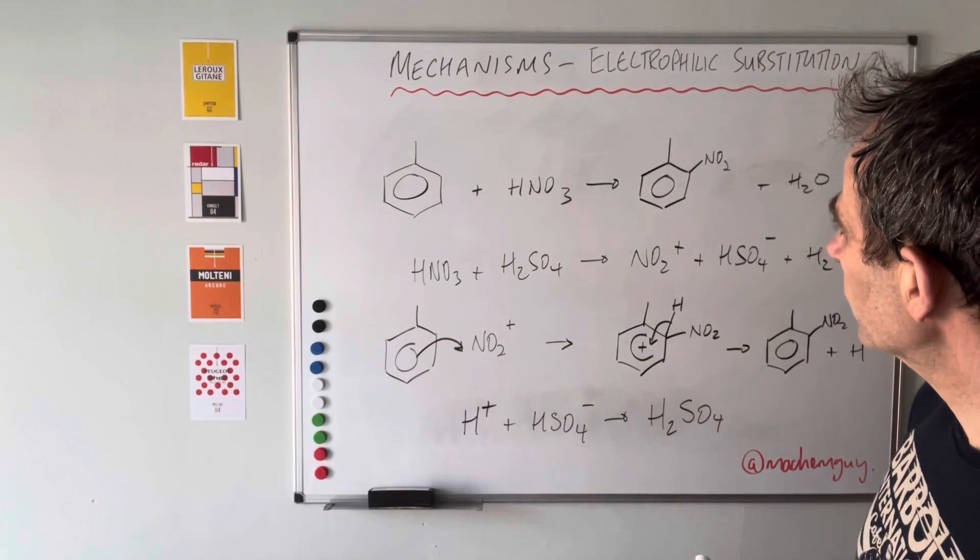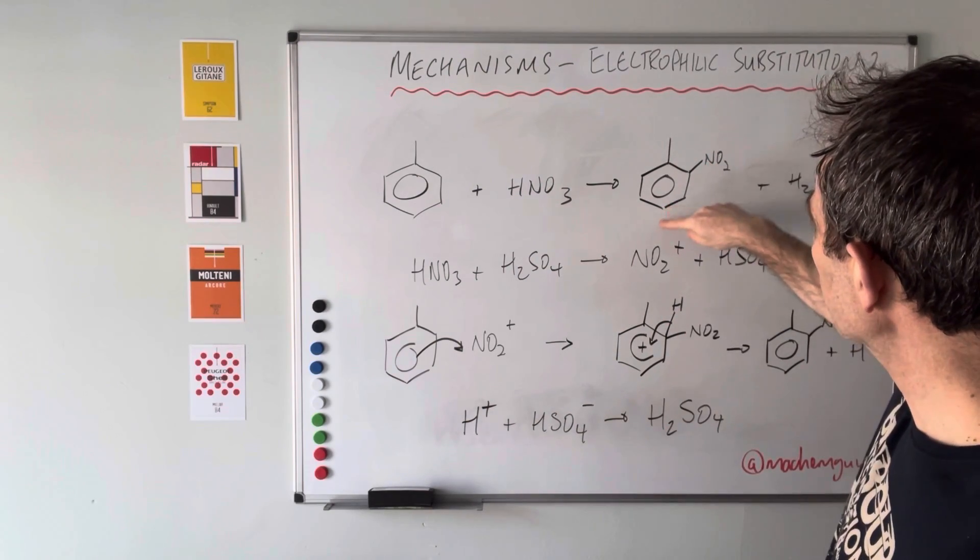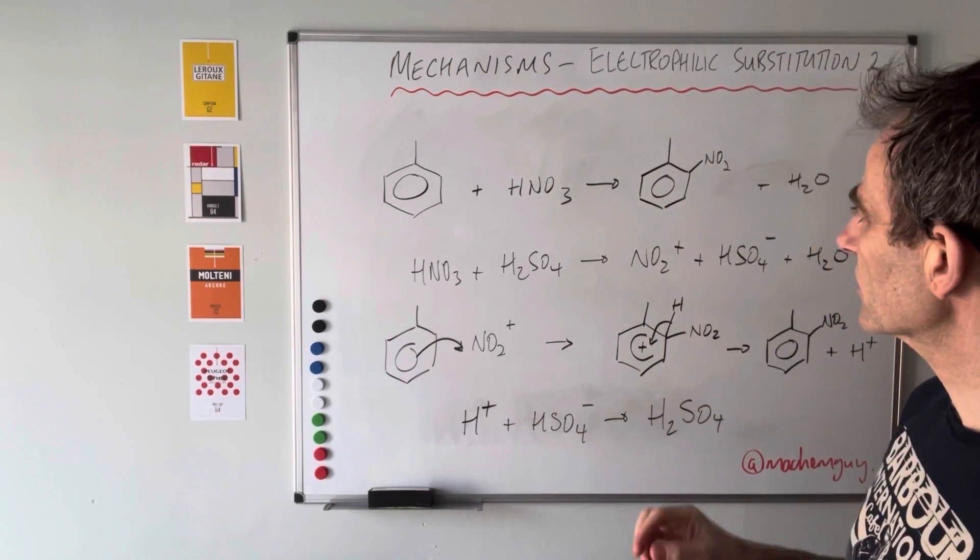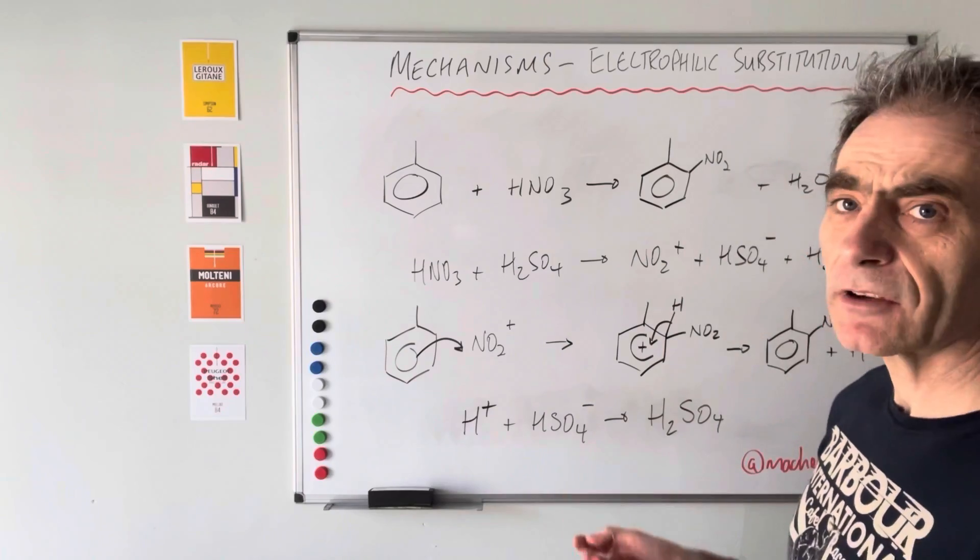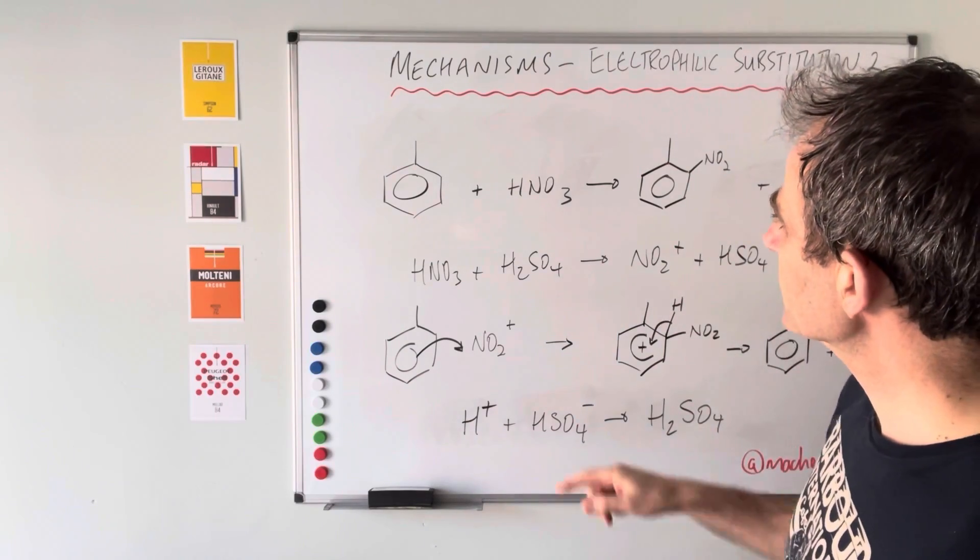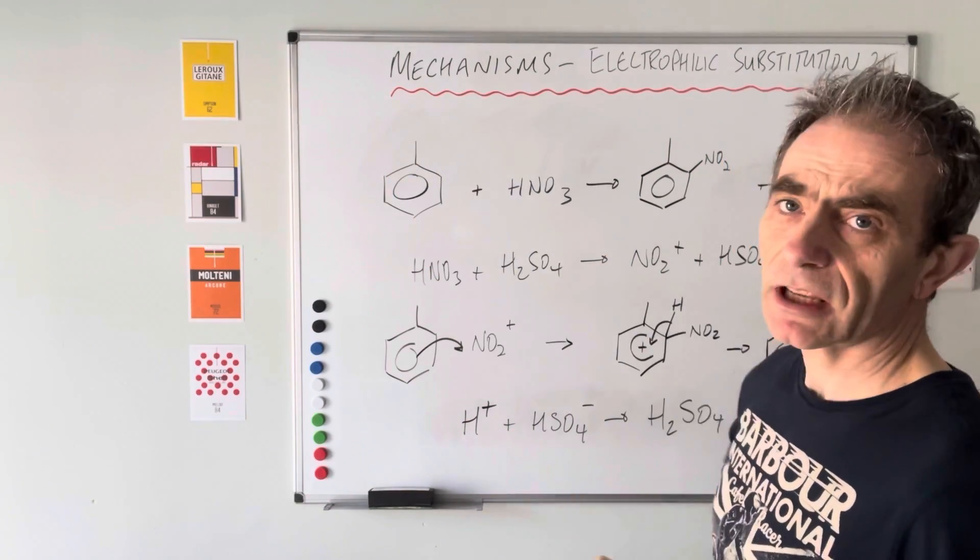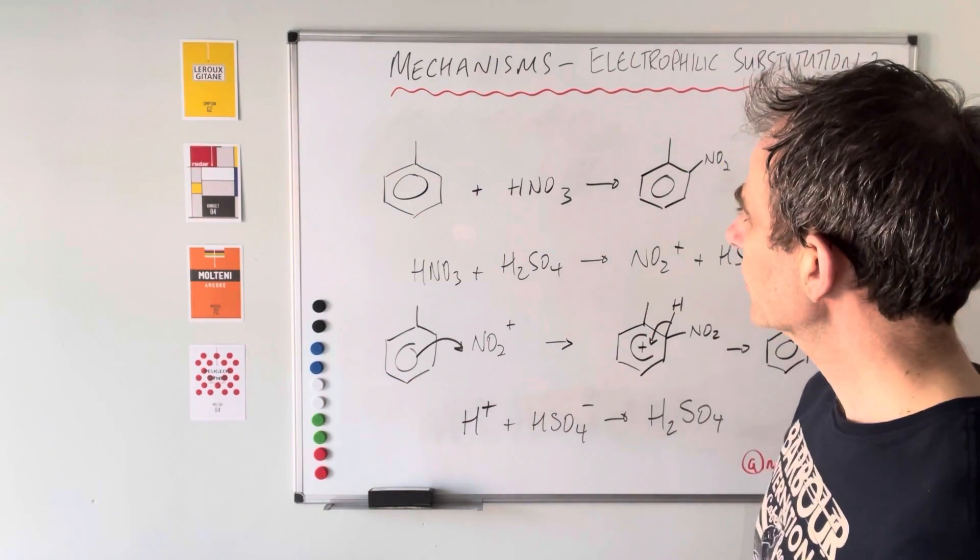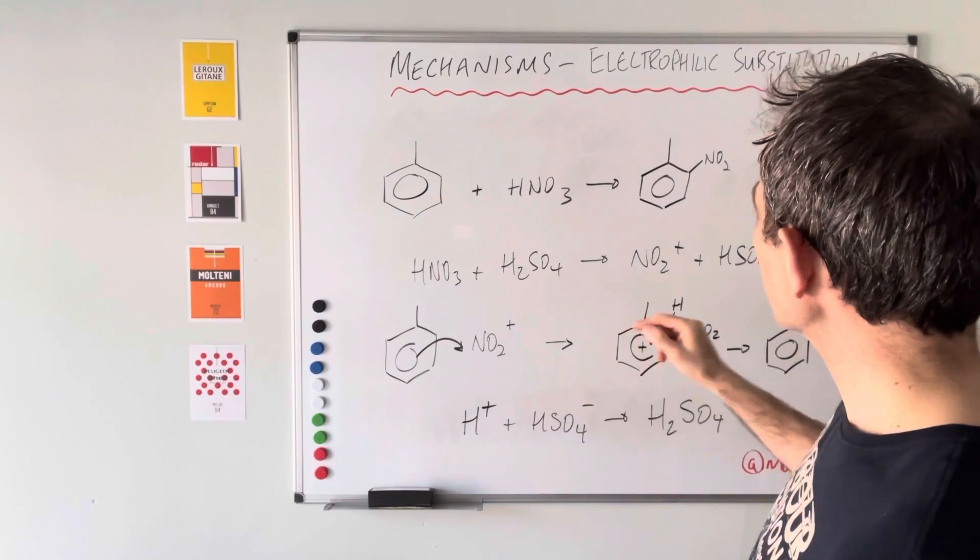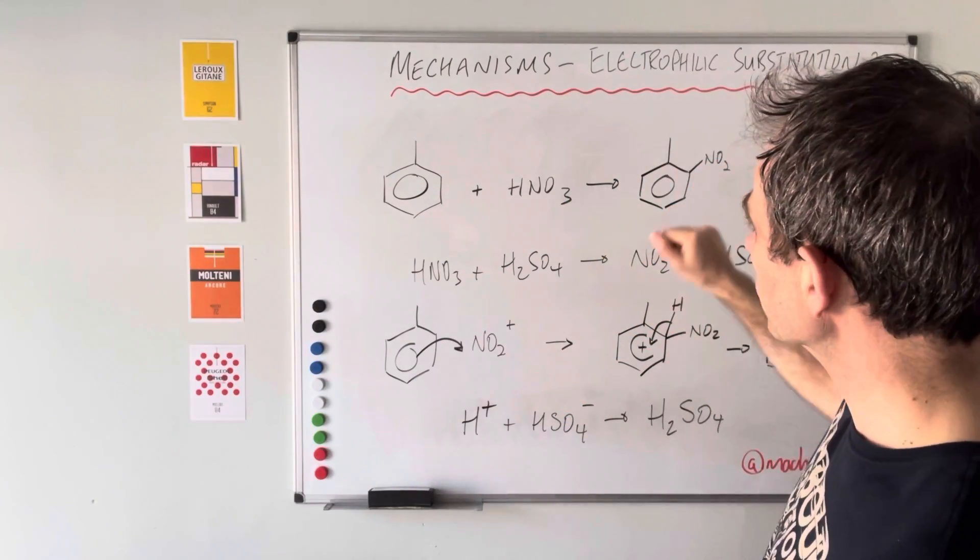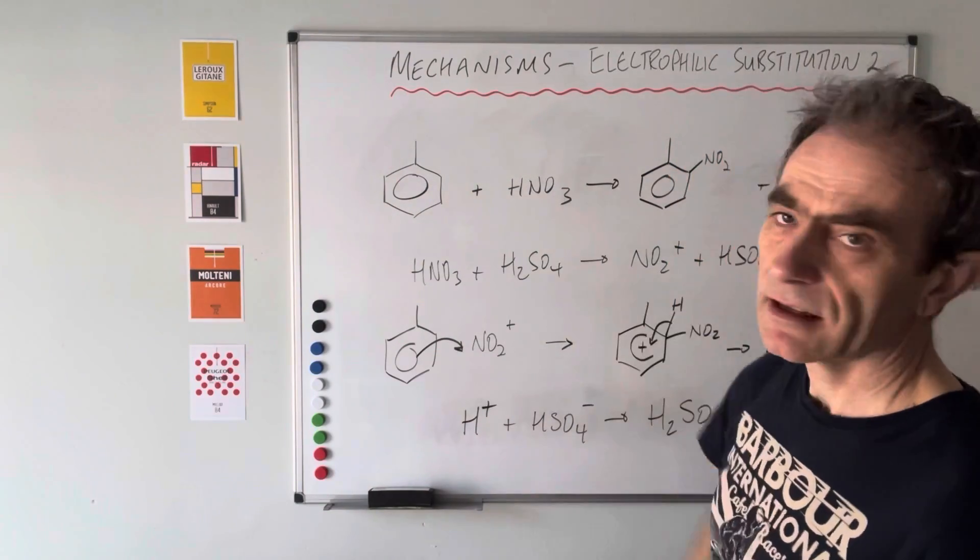The final question was why is the four nitro product - when the nitro group goes here - why is that produced less than the two nitro product? It's all down to the availability of carbon atoms. You can see the two position you've actually got two carbons available to create that two nitro product, whereas for the four nitro product there's literally just that carbon there. So the nitronium ion has got more opportunity to attach itself there than it has there.